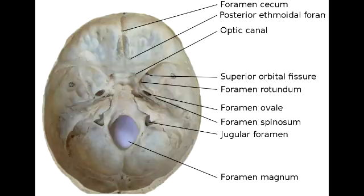What passes through the foramen rotundum? Cranial nerve V2 passes through the foramen rotundum, and cranial nerve V2 is the maxillary nerve.